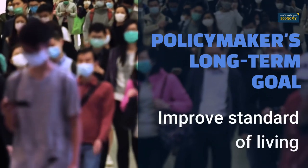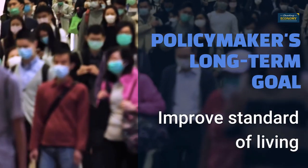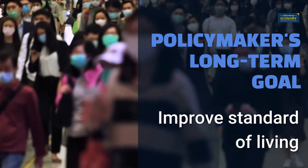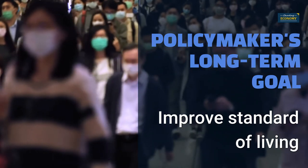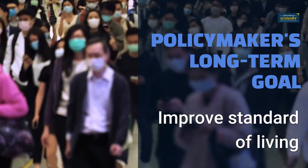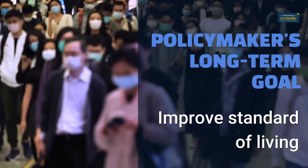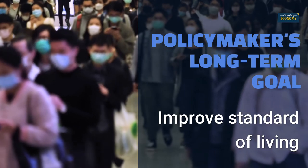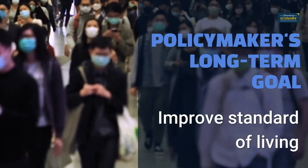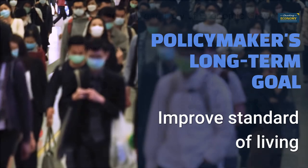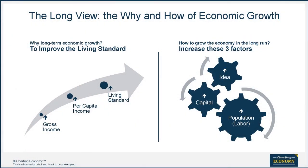Economic policy makers' long-term goal is to improve the country's standard of living and its population's well-being. Without economic growth, the standard of living does not improve, as had been the case in most countries before the Industrial Revolution. So, how do you make the economy grow in the long run? A simple formula for long-term economic growth dictates that you have to increase these three factors: labor, capital, and idea. That's the job of policy makers.